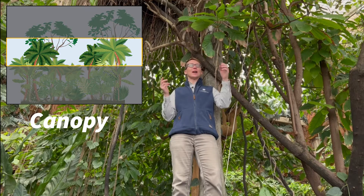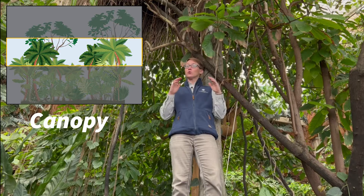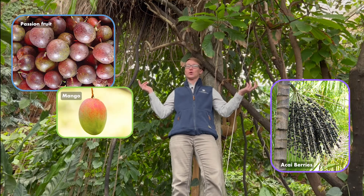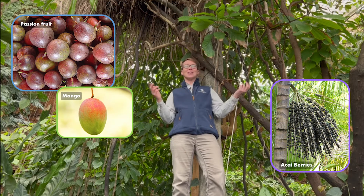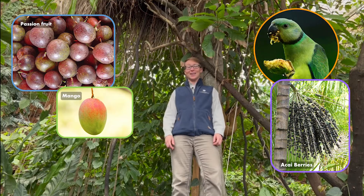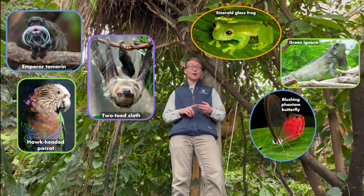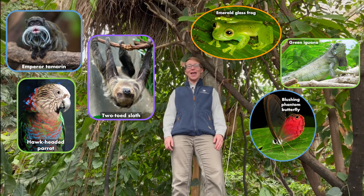Above the understory is the canopy. High up in the trees, there are lots of leaves and branches that act like a rooftop for the understory and forest floor below. It helps block wind, rain, and sun, leading to a more humid, still, and darker environment down below. Up here in the canopy there's a lot of fruit, so a lot of food to eat. Most of the animals and plants live in this area, and with that fruit comes seeds. The animals eat the seeds and poop them out, which helps more plants grow. Animals here are great climbers or flyers — birds, monkeys like emperor tamarins, sloths, tree frogs, lizards, and insects.